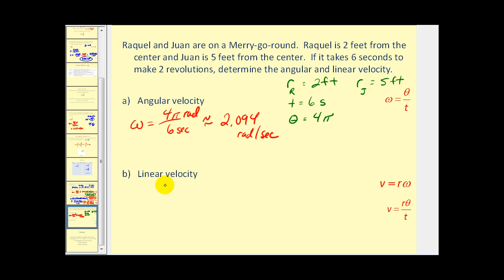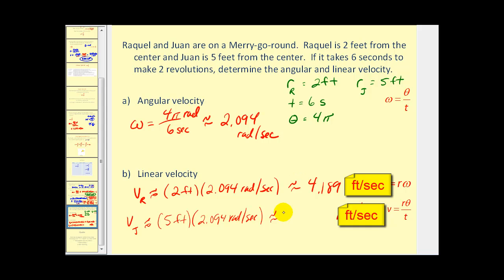Linear velocity, notice that it does require the radius. Therefore, we're going to have a linear velocity for Raquel and also one for Juan. Let's find the linear velocity for Raquel first. That will be equal to the radius times the angular velocity. So the radius for Raquel was 2 feet times the angular velocity, which is approximately 4.189 feet per second. And for Juan, the only thing that's going to change is the radius is now 5 feet. And this product is 10.47 feet per second. So we can see that even though they're on the same merry-go-round, since Juan is sitting further out from the center of the circle, he's actually going more than twice the speed of Raquel.